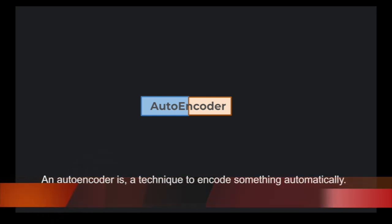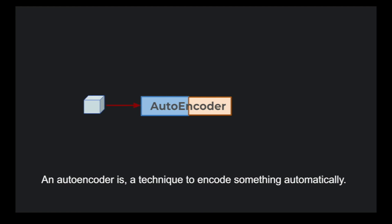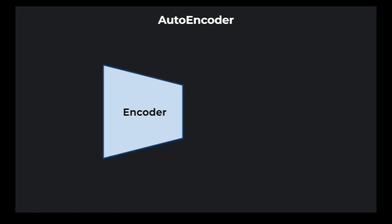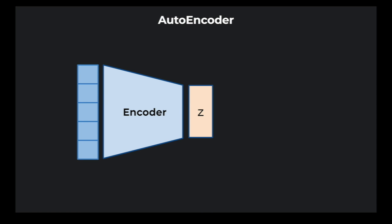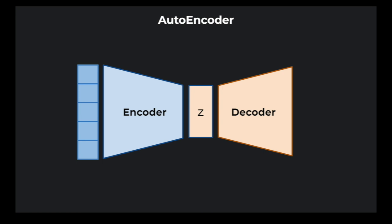An autoencoder is a technique to encode something automatically. It means for the autoencoder there is input data that has to be encoded, and it can be decoded using the same process. The basic principle behind autoencoder is that it should be able to encode the given input and, by using the encoded value, generate the same input. The first component is the encoder — it learns how to compress the original input into a small encoding. The second component is the decoder — it learns how to restore the original data from that encoding.